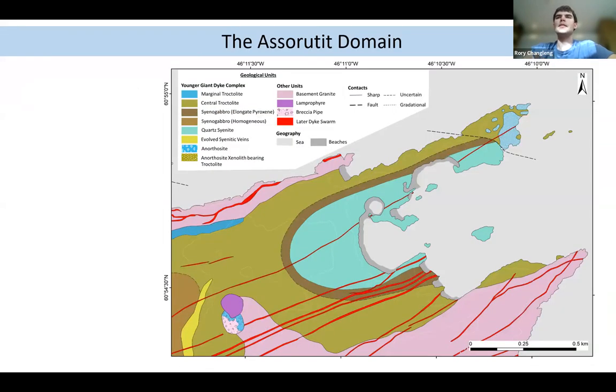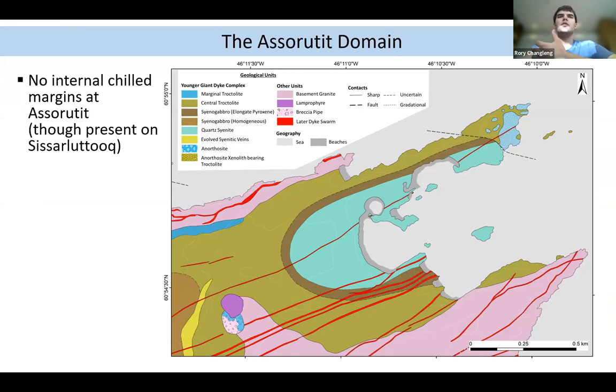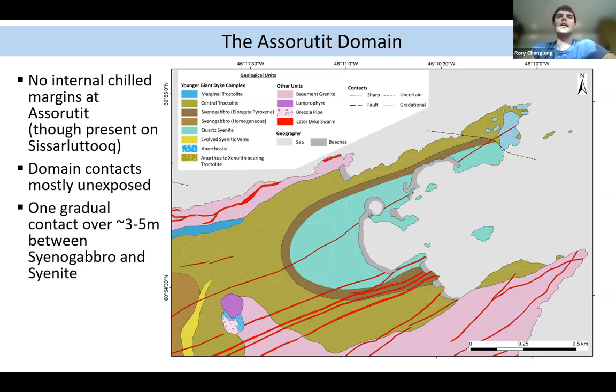So if we look at a more detailed map of the Assortutit domain here, essentially we see no internal chilled margins exposed. These are exposed elsewhere in the giant dike on this island in Greenland, but not here. And the contacts between the units are mostly unexposed, with the exception of one area in the north where it's gradual over three to five meters between the central syenite portion and the surrounding syenogabbro.